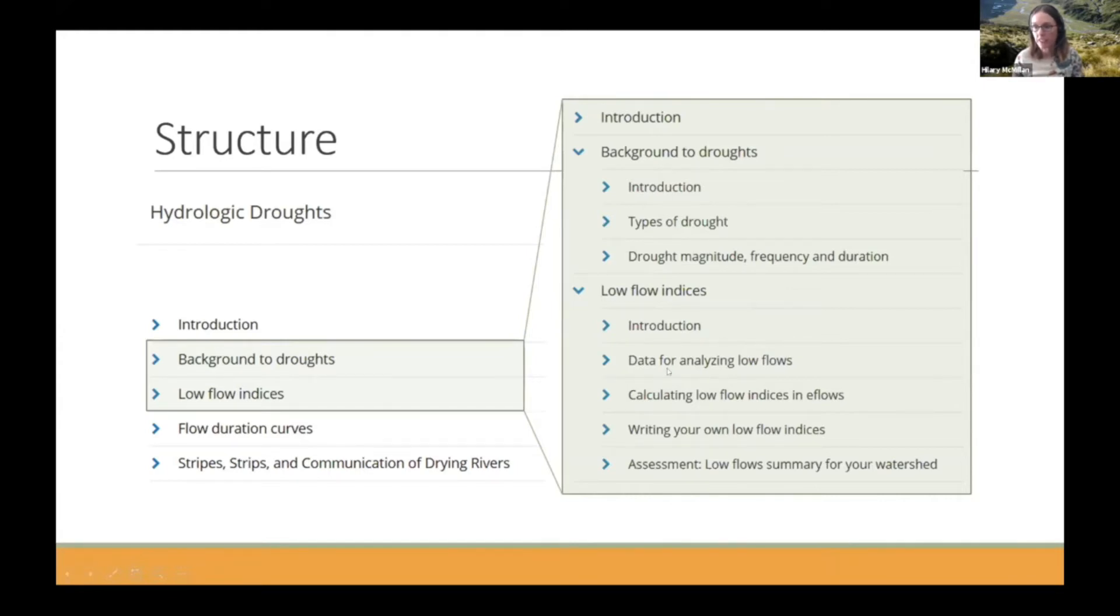So they're going to do that in two ways. They're going to use the eFlows tool, which is actually something that Belize has been involved in developing. But it's a really nice web tool where they can upload data from their watershed and then automatically calculate various indices. And then the second part is that they're going to write some of their own indices. So this helps them to actually see what's going on behind the scenes of a tool like eFlows and actually process some of their own data just using a spreadsheet.